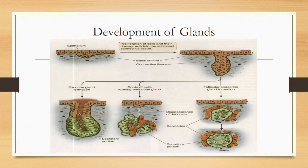The endocrine glands detach from the surface; they do not require a duct to transport their secretions. Instead, they develop blood vessels around them which transport their secretions to distant areas. You can see here the follicles of endocrine gland formation — simple glandular parenchyma surrounded by capillaries.